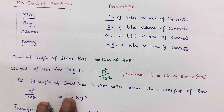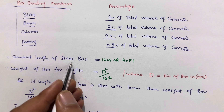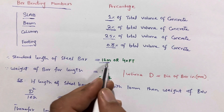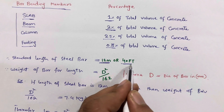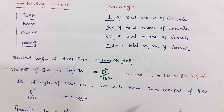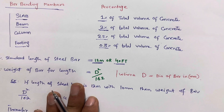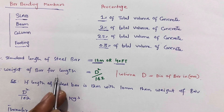The standard length of a steel bar is 12 meters, which is 40 feet. This is the standard length of steel reinforcement.